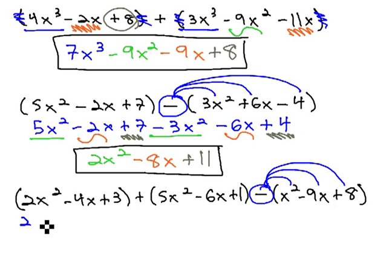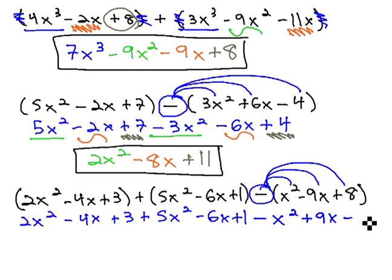With no other parentheses needed, we now have 2x² minus 4x plus 3 plus 5x² minus 6x plus 1. And then, distributing the negative will change the signs, giving us negative x², positive 9x, and negative 8.